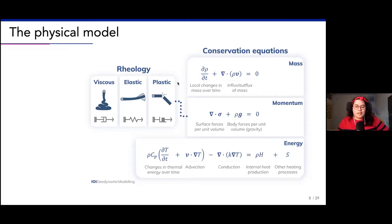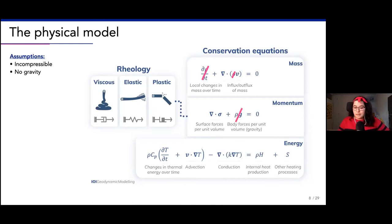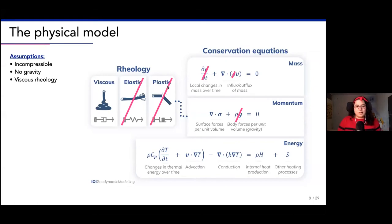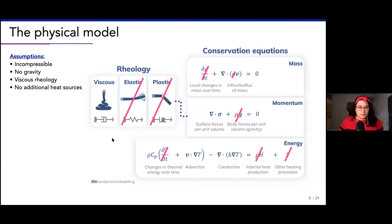This is the most general form of all these equations, but not everything is completely relevant for us, so we're going to simplify and make some assumptions. First, we assume that things are incompressible - the material is incompressible, which is a valid assumption for the type of modeling we're doing. Then there is no gravity, so that disappears. We only focus on a viscous rheology. We're not interested in elastic rheologies or plastic - in geodynamics, plastic means an approximation of brittle rheology.